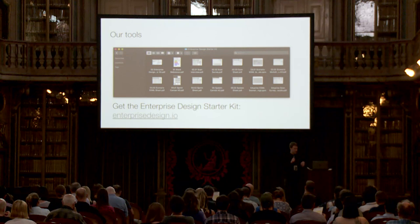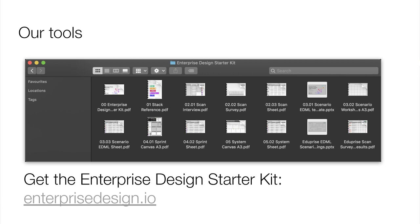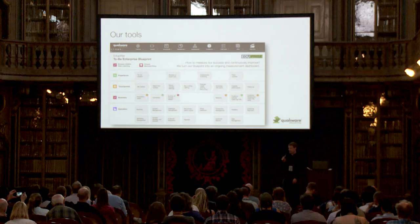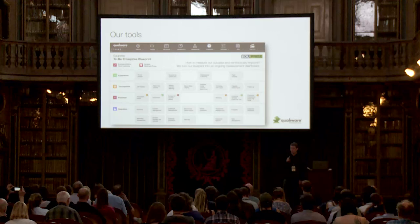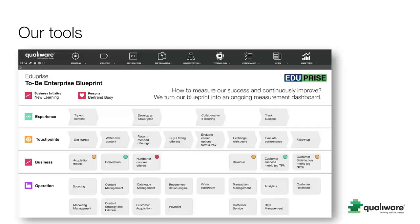We also created what we call the Enterprise Design Starter Kit — a set of simple, simplified tools that is free. You can download it for free on our website, and it gives you basically for each component of the enterprise design framework something to get started with. We also look at tools — how can we model enterprises? Our sponsor Qualiware put our enterprise design modeling language into their tool. The same goes for our sponsor Session Lab, where you can now plan an enterprise design introduction kit to use for an introduction workshop.